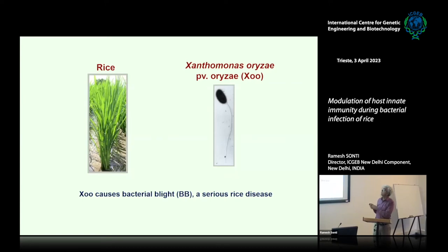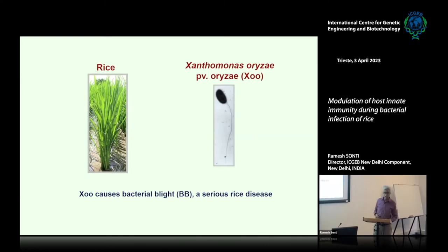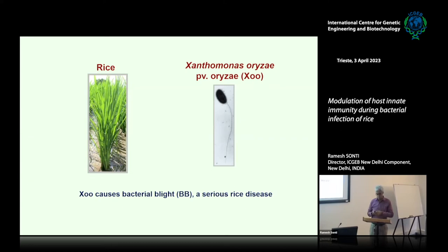The host plant is rice, and this bacterium is called Xanthomonas oryzae pathovar oryzae — I will refer to it as XOO for short. XOO causes a disease called bacterial blight, which is a very serious rice disease. At the end I will talk about how we have been able to develop some rice varieties that are resistant to this disease.